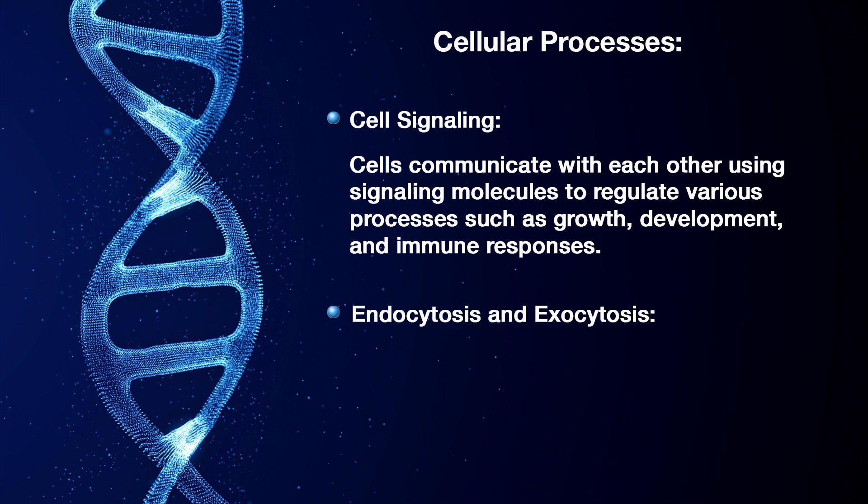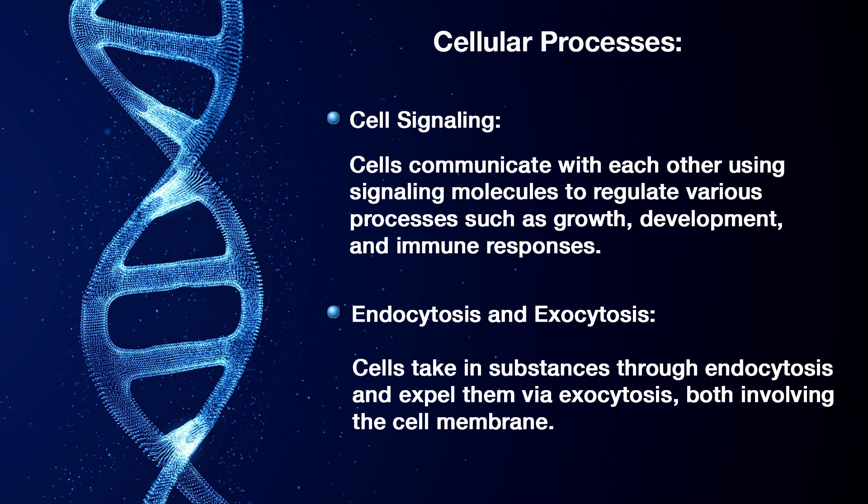Endocytosis and exocytosis: cells take in substances through endocytosis and expel them via exocytosis, both involving the cell membrane. Whenever anything is to be taken into or expelled out of the cell, a membrane and a particular system is in place. Endocytosis and exocytosis manage this in-and-out process through the cell membrane.